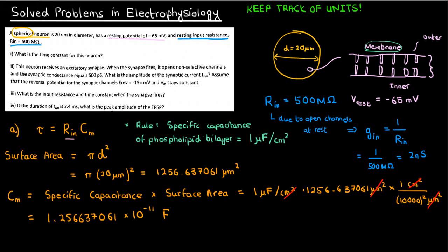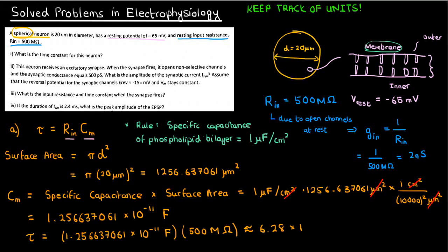So we have both the capacitance and the input resistance. If we multiply them together, we get approximately 6.28 times 10 to the negative 3 seconds, which is 6.28 milliseconds. So we're done with part A, and let's go to part B.